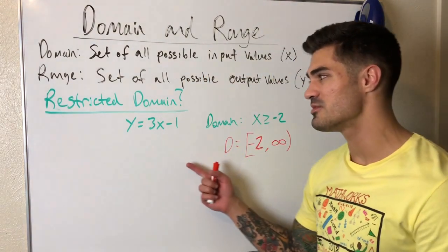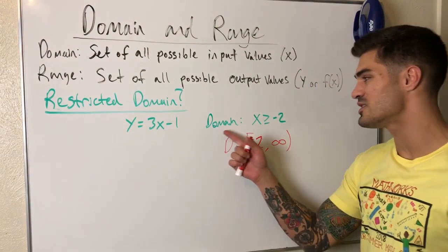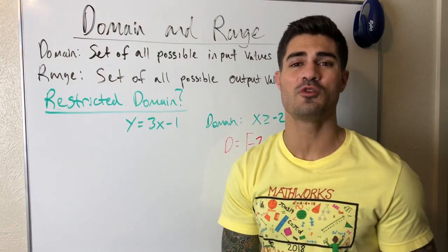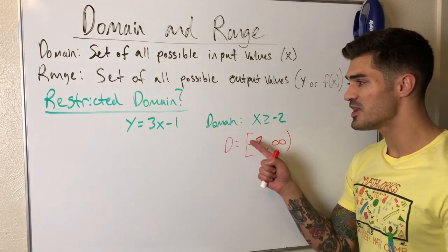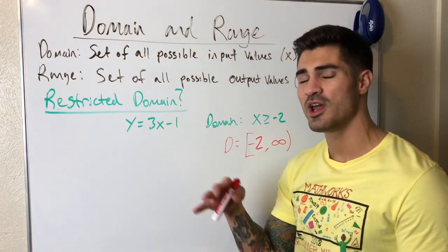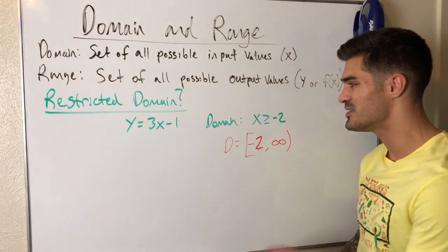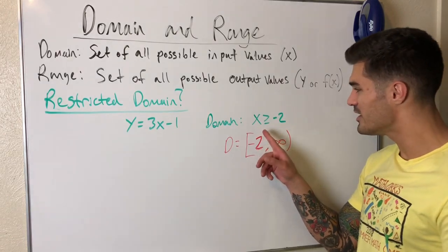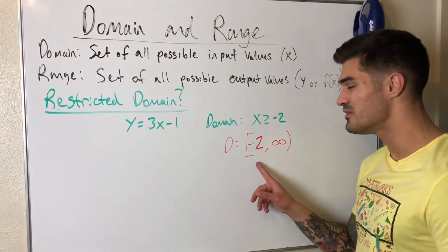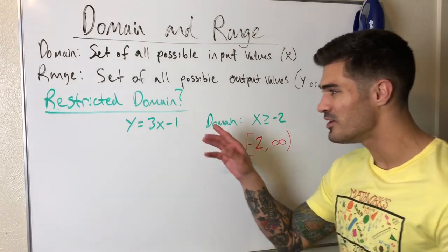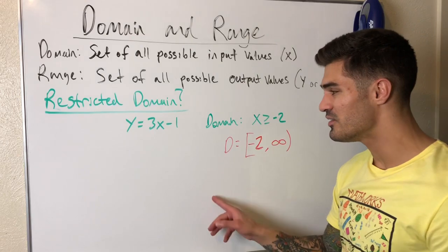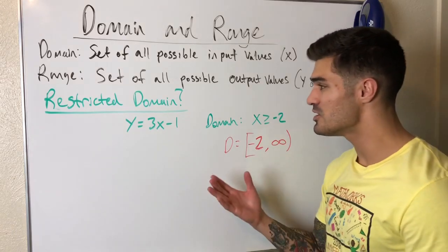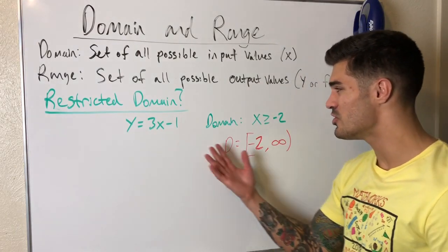Suppose we have some linear function that is restricted to a certain domain. Normally linear functions have a domain of all real numbers, but in this case we have a restricted domain — we can't just plug in whatever we want for x. We have to make sure it falls within the interval: x has to be greater than or equal to negative 2. So I can plug in negative 2 and any number bigger than that, but negative 3 or negative 5 are not included in our restricted domain.